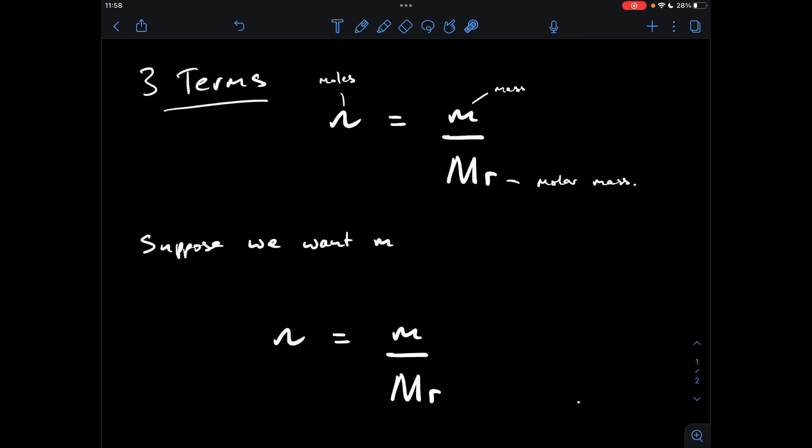So we'll just go back to the original equation, n equals little m over Mr, we want m, basically we need to get Mr out of the way, so all we'll do is take it up there, and do the opposite of what it's doing on the side we're moving it from, so it's dividing here, so when we take it to the other side, it's just going to multiply.